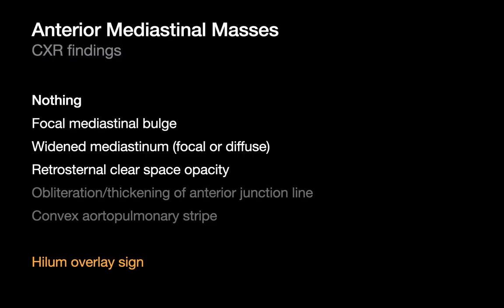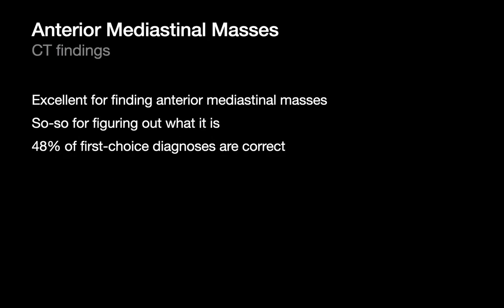The bottom line is the performance of chest x-ray for diagnosing anterior mediastinal masses is not optimal, and often the presentation is going to be nothing visible. CT is much, much better at picking up the presence of an anterior mediastinal mass. But once you've seen the mass, figuring out what it is — CT is not quite so good at that. The first-choice diagnosis for an anterior mediastinal mass on chest CT is usually right only about half the time.